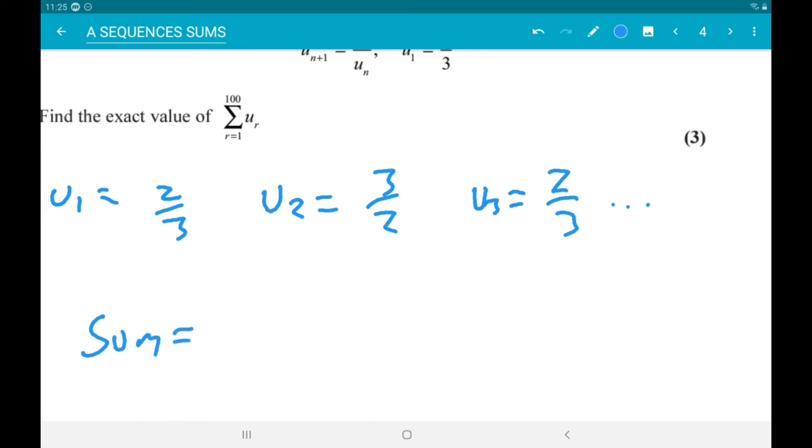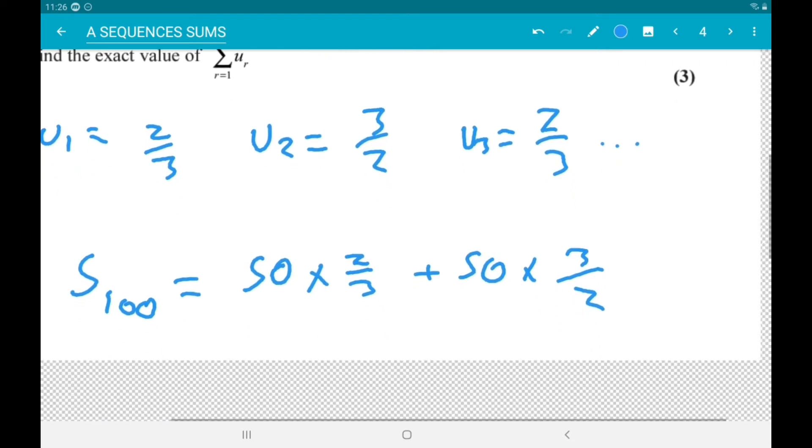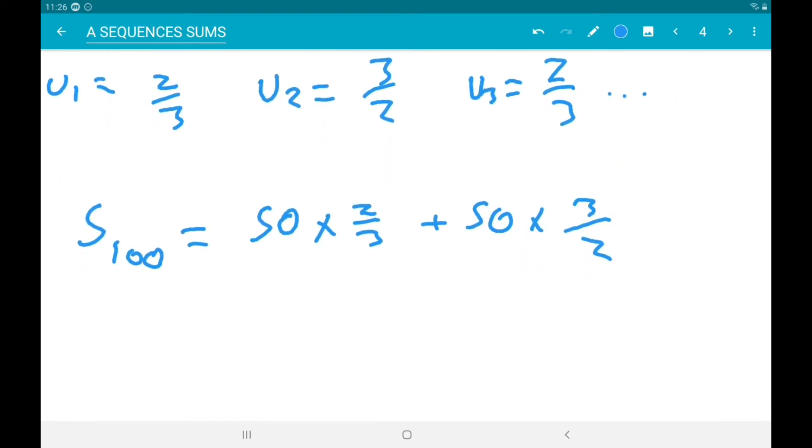So the sum, let's call it S100, is just going to be fifty times two thirds plus fifty times three halves. Now that is going to give us three hundred and twenty-five thirds.